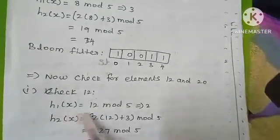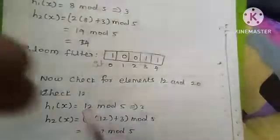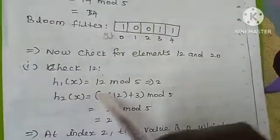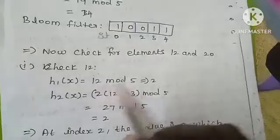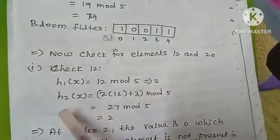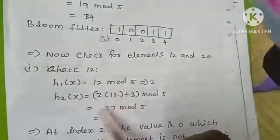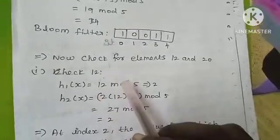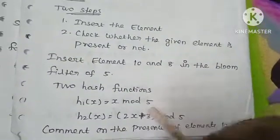Now we will apply the hash functions to x = 12. First, h1: 12 mod 5 gives remainder 2. Then h2: the x value is 12. We check the hash function h2(12) = 2(12) + 3 mod 5 = 27 mod 5 = 2.